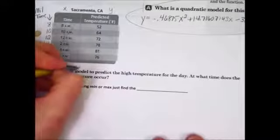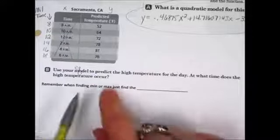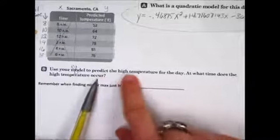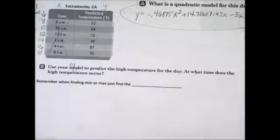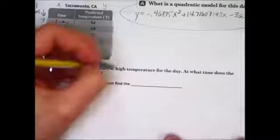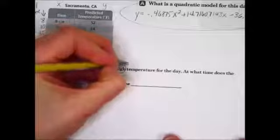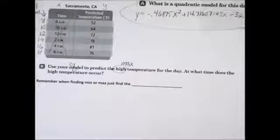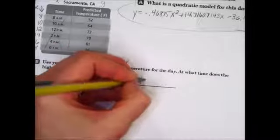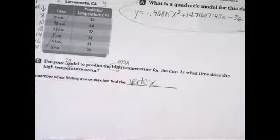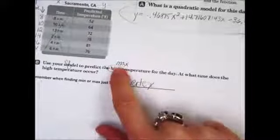And then we'll move on to part B. Use your model, which is a fancy way of saying equation in math, to predict the highest temperature for the day. At what time does this temperature occur? Remember when you're finding high temperature, that's like asking about the maximum temperature, right? When you're finding the min or the max, just find the vertex. I can't stress that to you enough. So they ask you for the max, find the vertex.